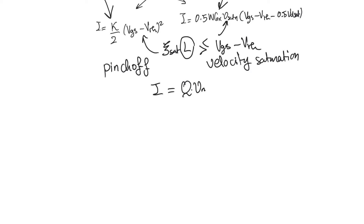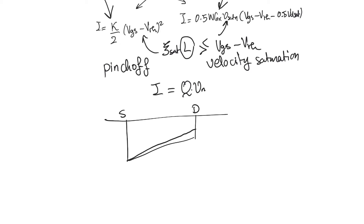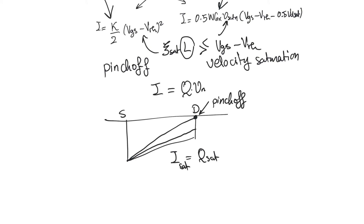Let's consider pinch-off saturation, which is what we are used to in long channel transistors. The channel has a variable charge profile from source to drain, mainly caused by rising drain potential making the channel narrower at the drain. The more drain potential we impose, the shallower the channel is at the drain, and the less charge density there is at the drain — until at some point there is no charge at the drain. This is pinching off the channel. Once Q saturates, the current saturates, and the velocity profile becomes fixed to keep the current saturated.